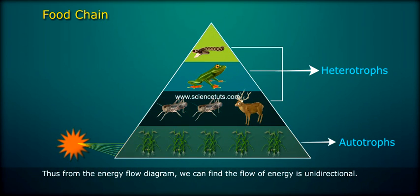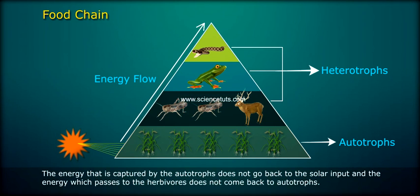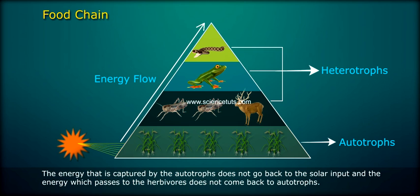Thus, from the energy flow diagram, we can find that the flow of energy is unidirectional. The energy that is captured by the autotrophs does not go back to the solar input, and the energy which passes to the herbivores does not come back to the autotrophs.